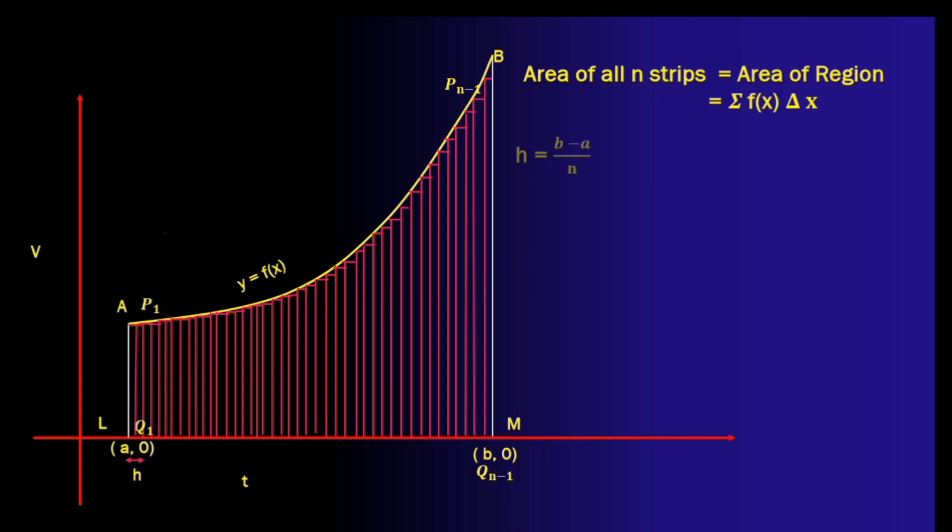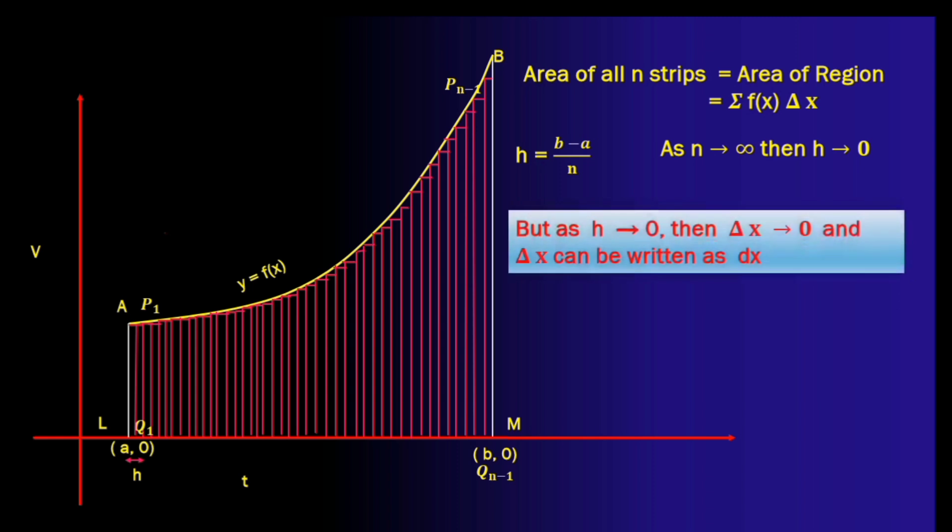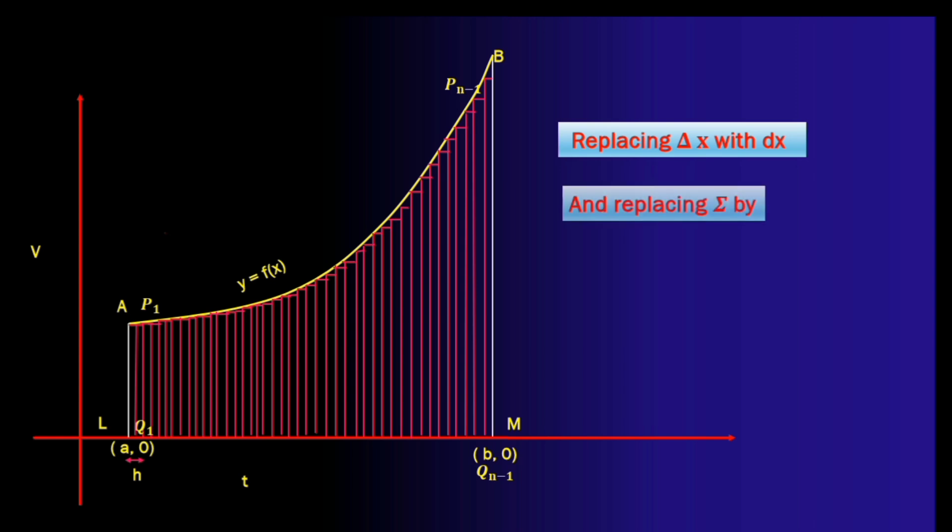Now as the number of rectangles or n tends to infinity the thickness or h tends to 0 and what is h? Yes delta x. So delta x is also tending to 0 but when that happens we know that delta x turns into dx. We have learned that in differentiation. Also the summation of these infinite number of strips need to be shown differently. So this sigma is now going to be replaced by the elongated s. So replacing delta x with dx and sigma by the elongated s the area of the region changes from this expression into this expression.